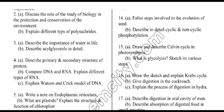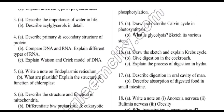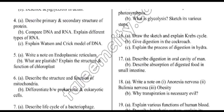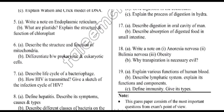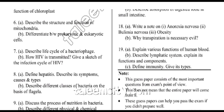Draw and describe the Calvin cycle in photosynthesis; what is glycolysis — sketch its various steps; draw and explain the Krebs cycle; give digestion in the cockroach; explain the process of digestion in hydra; explain digestion in the oral cavity of humans; describe absorption of digested food in the small intestine; write a note on anorexia nervosa, bulimia nervosa and obesity; why is transpiration necessary; explain various functions of human blood; describe the lymphatic system and explain its functions and components.